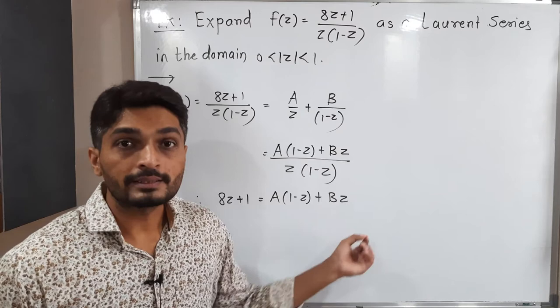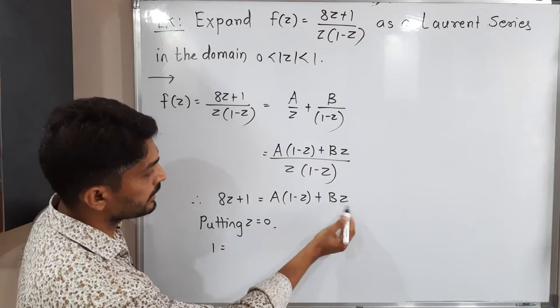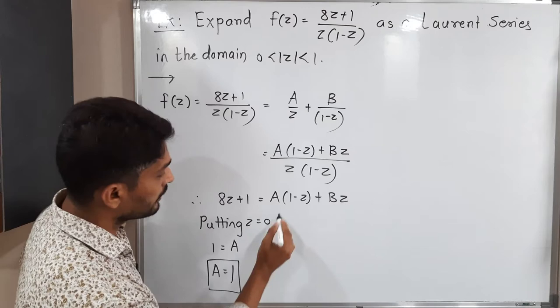To find value of a, I am going to make it 0 by putting z is equal to 0. Let us do putting z is equal to 0. If I put z is equal to 0, 1 is equal to a. So here we are getting a is equal to 1.